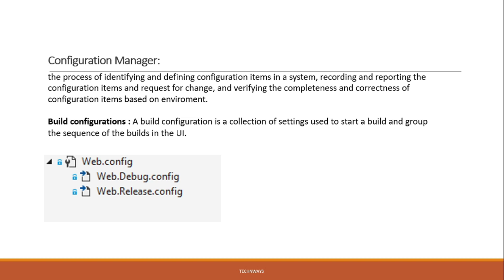The basic difference is that you can see here we have two different configs: debug and release. We cannot add this config directly by right-clicking on web.config and adding a file — we always need to add the configuration through the Configuration Manager. When adding a new build configuration through the Configuration Manager, it always injects some dependency or changes in the solution file as well as in the csproj file.